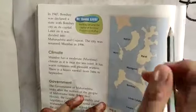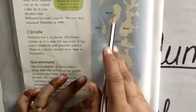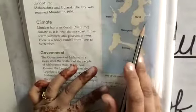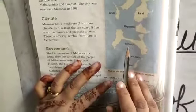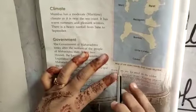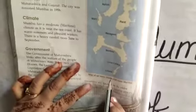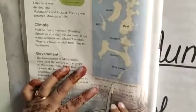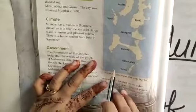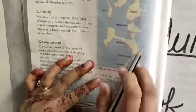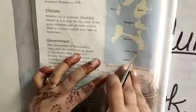On the last page we can see the seven islands of the group in a map. You can see Burley, Parale, Mazgaon, Bombay, Little Kulawa, and Kulawa. This is the map of the old seven islands of Mumbai, which was given in India.